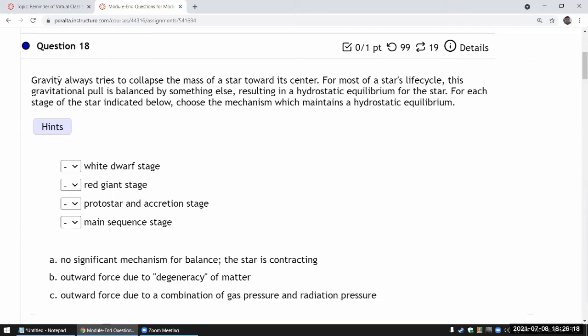So Question 18 says gravity always tries to collapse the mass of a star toward its center. I've mentioned in multiple places that what drives the stellar evolution cycle is the balancing between the collapsing pull of gravity and something that's opposing the pull to establish a hydrostatic equilibrium.